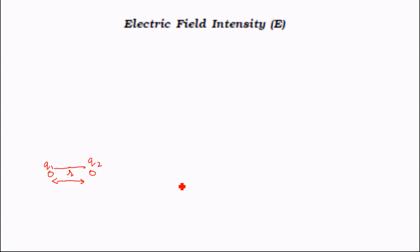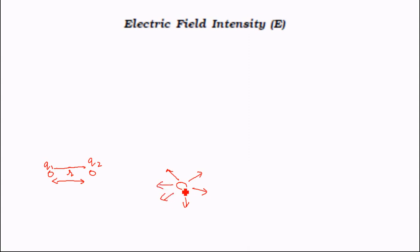So now what is the electric field? Instead of considering two charges, if we consider only one charge — suppose we have one charge — that charge will have an electric field all over the place. What electric field means is that if some other charged particle comes closer to this particle, then it will be influenced by this particle.